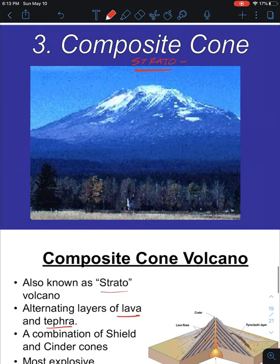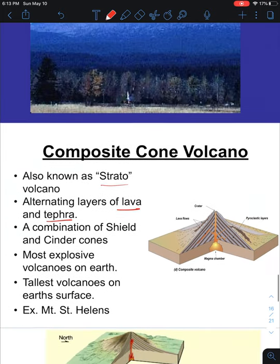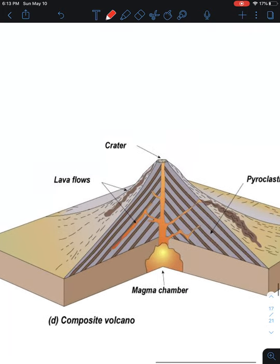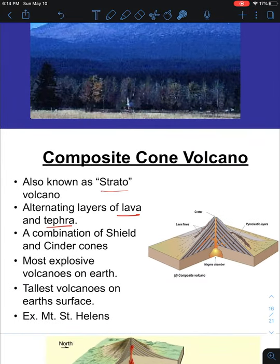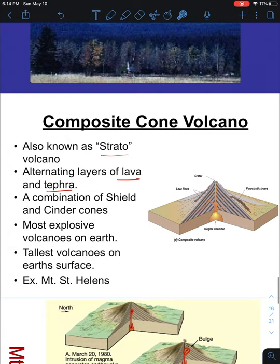Mount Rainier has built up as a composite volcano with visible lava flows shown in the picture. Between lava eruptions we get pyroclastic layers and tephra that builds up the volcano — it's just a combination of shield volcanoes and cinder cones. As with our magma types, the magma for composite volcanoes is a mixture of the two: not mafic, not felsic, but andesitic magma.